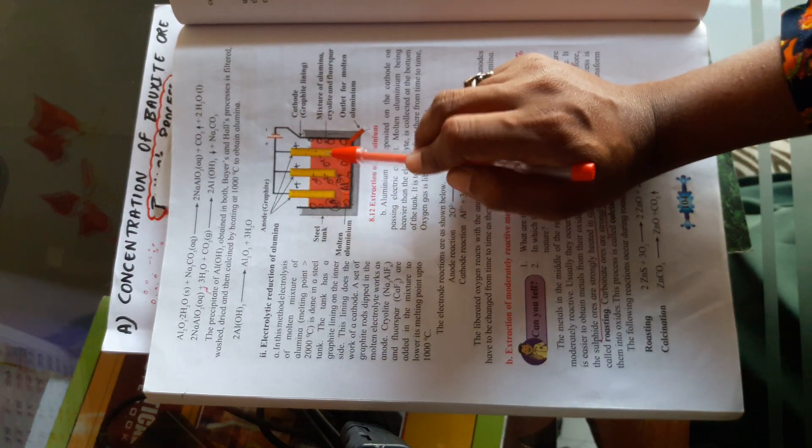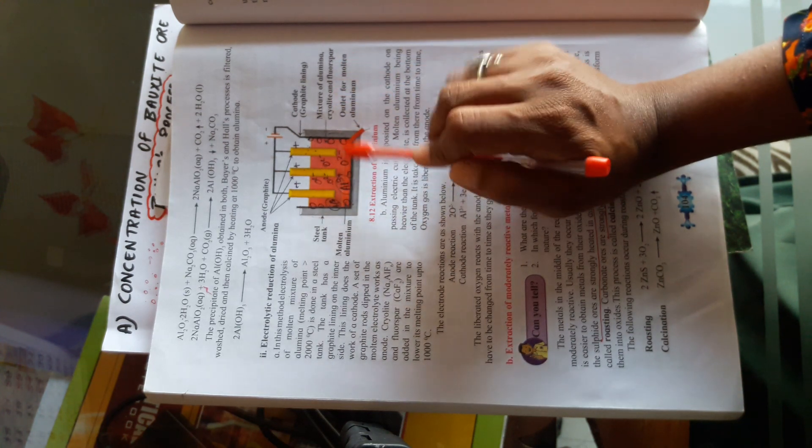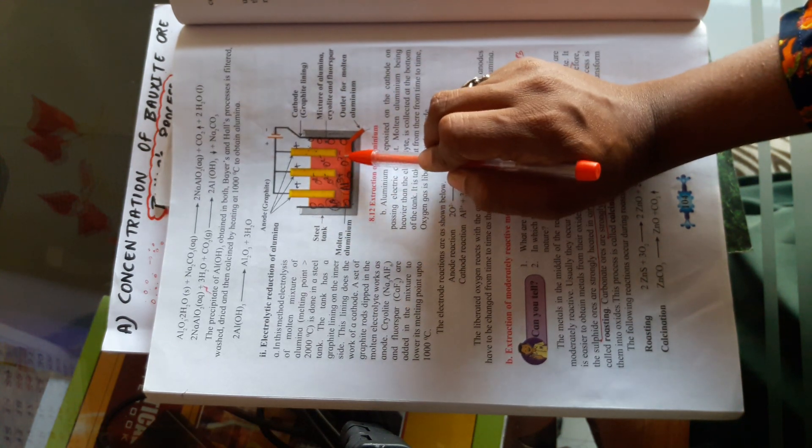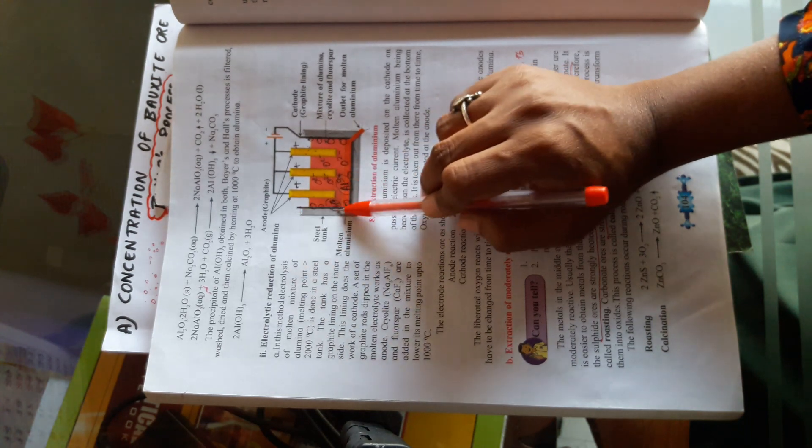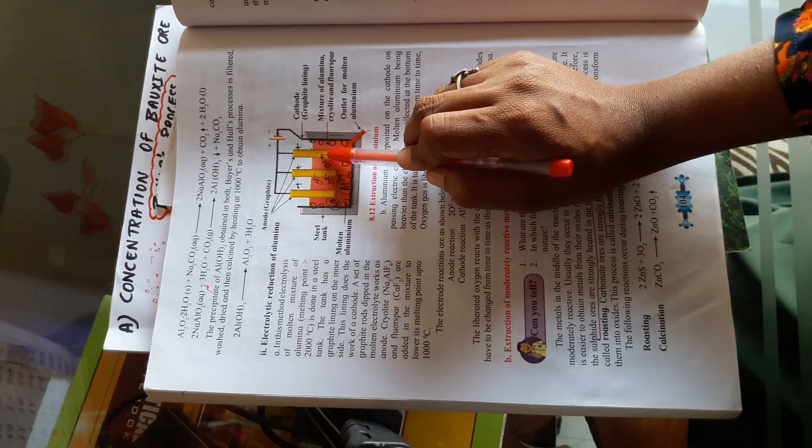Now molten alumina, that is Al₂O₃, in the liquid state, ions get separated: Al³⁺ and O²⁻. Al³⁺ is a cation, it will get attracted towards cathode. O²⁻ is an anion, it gets attracted towards anode.